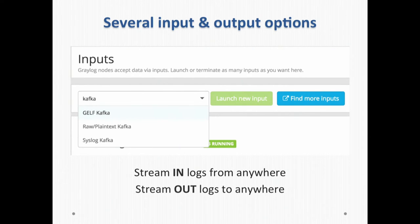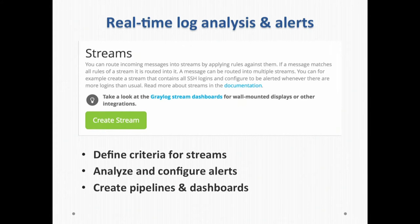Graylog can take inputs from a variety of sources and send output to a variety of destinations — TCP port, HTTP listener, Kafka, Syslog, and various others. It can do real-time log analysis and alerting with a feature called streams. You can think of streams as a separate pipe added to your input where you add some filter and get this filtered stream to do log analysis, dashboards, alerting, whatever you desire.